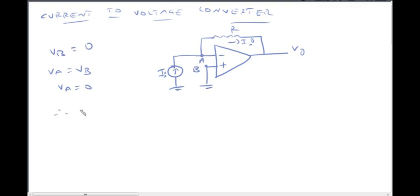Since V_b is zero, V_a will also be zero according to virtual ground concept. V_a equals V_b. Since V_b equals zero, the current I_i is the same. So I_i equals between node A and V_naught: V_a minus V_naught by R.